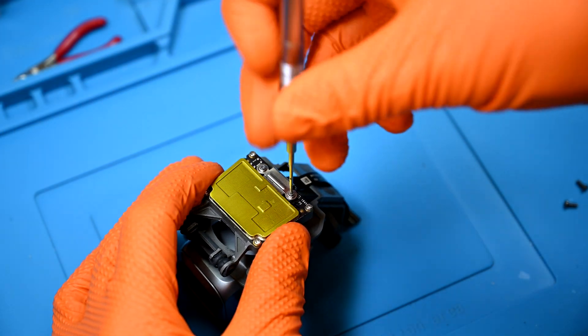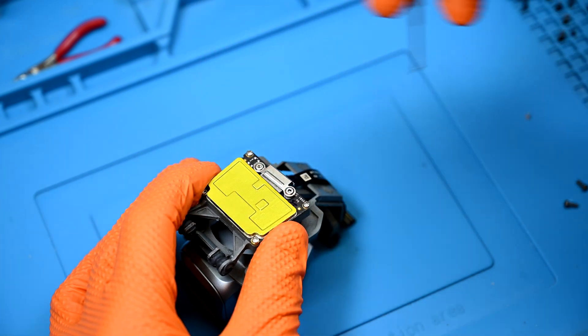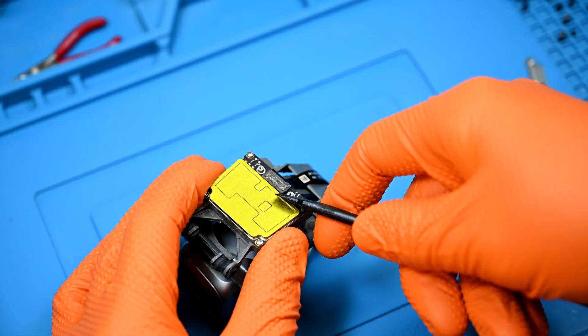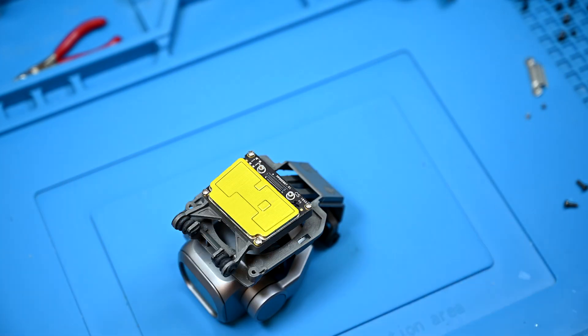At the top of the assembly we find the gimbal control board. An aluminum shield holds the main ribbon secured against all the vibrations it endures during flight. It has two screws that need to be removed. It can then be disconnected and set to the side.